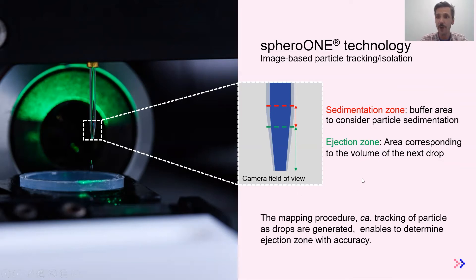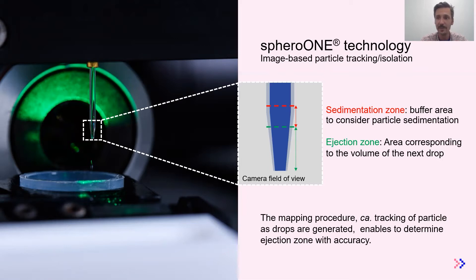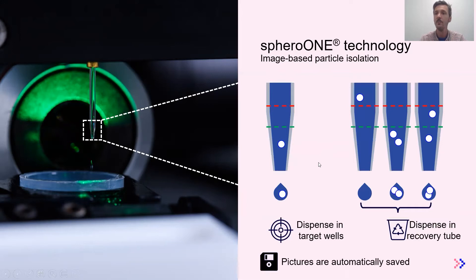This is also useful to track particles inside the capillary, which we use during a procedure called mapping to accurately determine the zone we call the ejection zone, which corresponds to the volume of the next drop. On top of that, we add the sedimentation zone, which is a buffer area used to account for sedimentation that may occur inside the capillary. Before making a single drop, the software can take an image and analyze it.